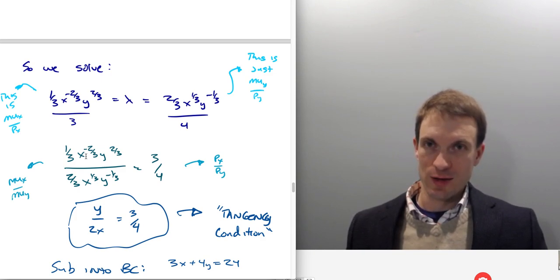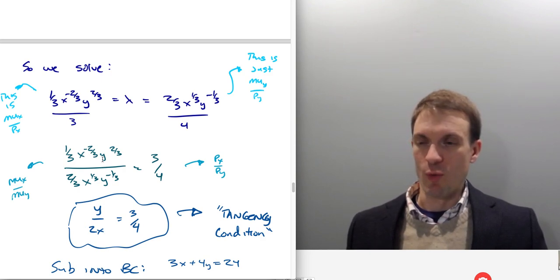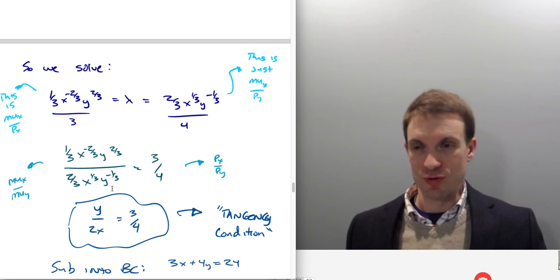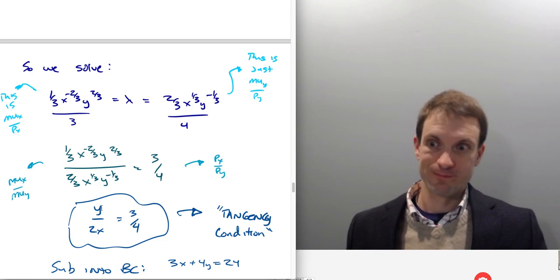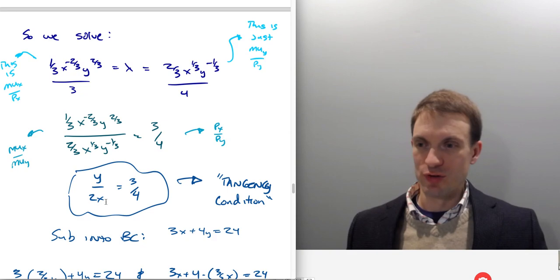And any base raised to a negative power is going to be the same as that same base with a positive power appearing in the denominator of a fraction. So X appears down here. What about Y? Y, I'm going to have 2/3 minus negative 1/3. 2/3 plus 1/3 is 1. So Y appears at the top of the fraction. So this is my tangency condition, Y over 2X.